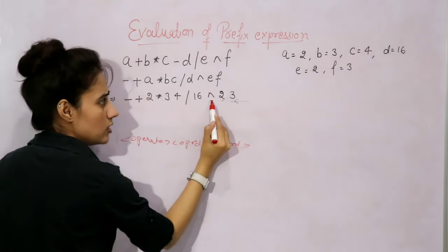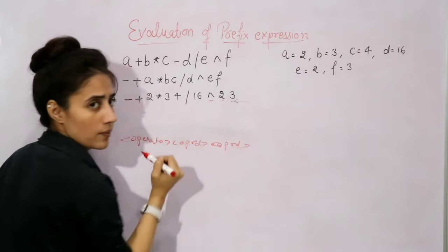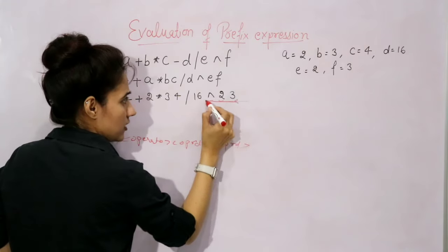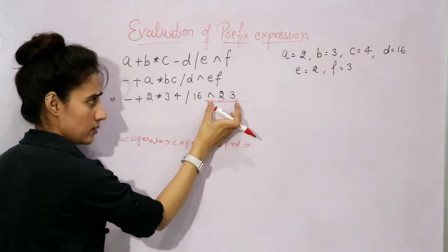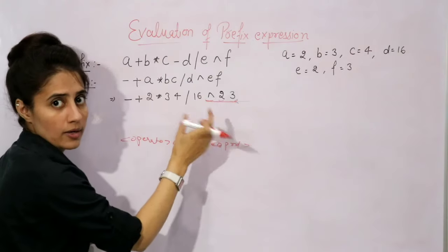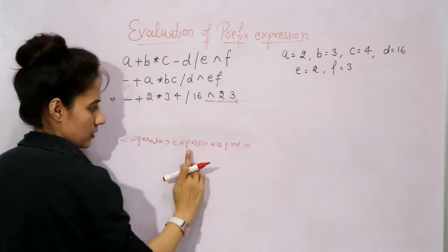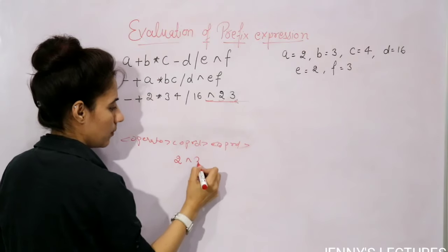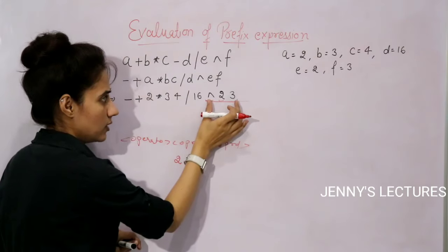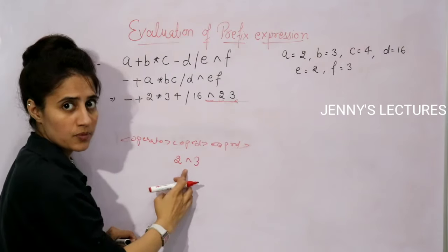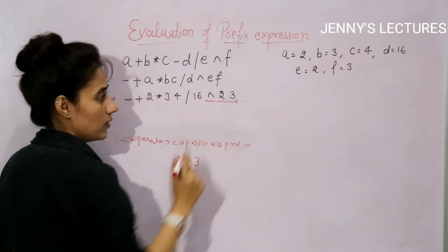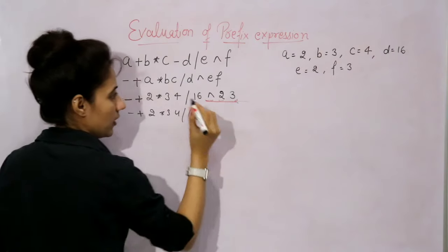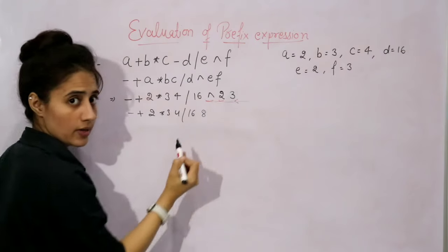While scanning, the first operator we find is this one. Just after this operator, the first operand is two and the other operand is three. This is a prefix expression — you can say within this prefix, one sub-expression is this one. To evaluate it: write the first operand, then the operator, then the second operand — in infix form, this prefix means two raised to the power three, which equals eight. After evaluation, this becomes eight, so now the expression is updated.